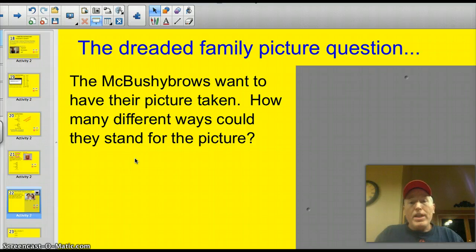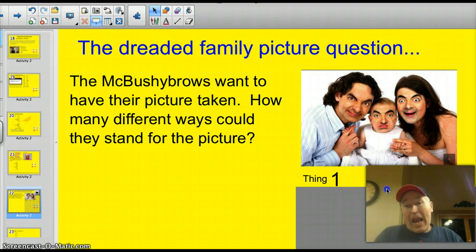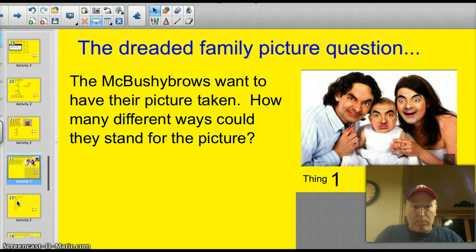This is the dreaded family picture question. Test makers love making this one up. So the McBushie brows want to have their picture taken. How many different ways could they stand for their picture or arrange themselves? Okay, go ahead and try. Oh, wait. You want to see the McBushie brows? I'm not sure if you do. You better get permission from your parents. Uh, yeah. I'm just going to call these thing one, thing two, and thing three. You know what I'm saying? All right. Well, we've had our fun. Let's see if we can solve this problem.